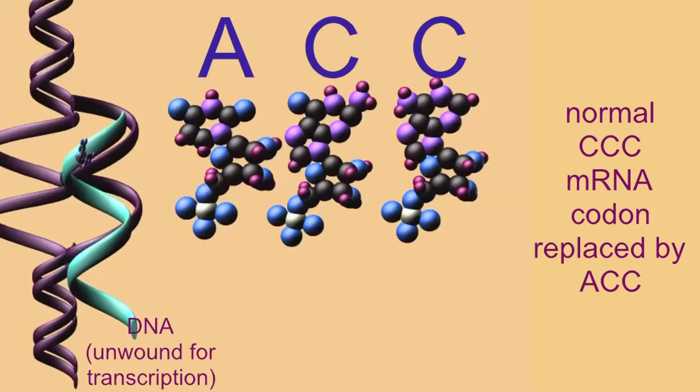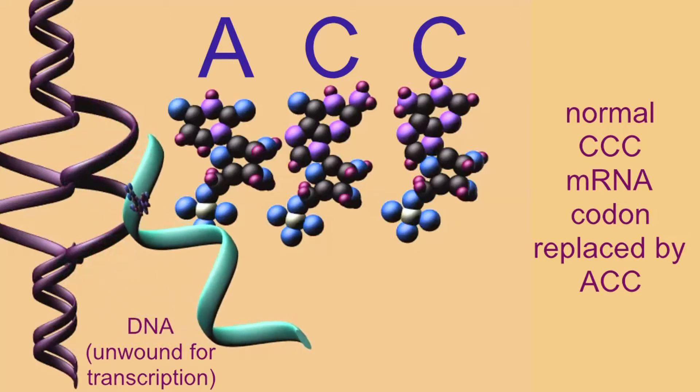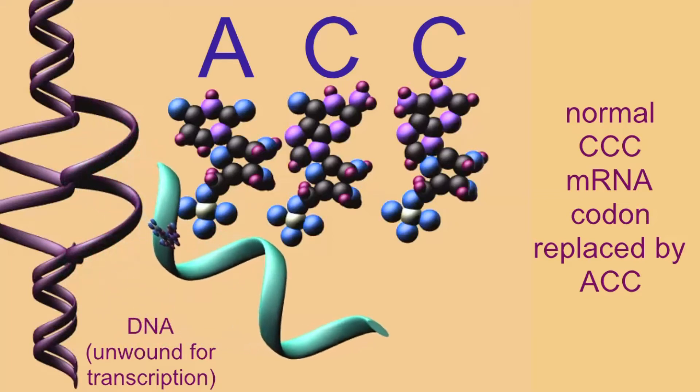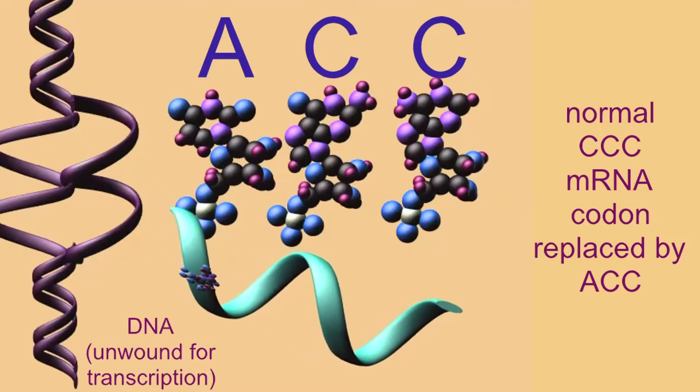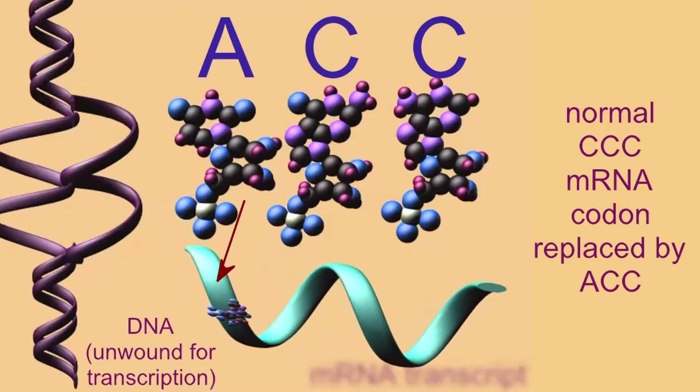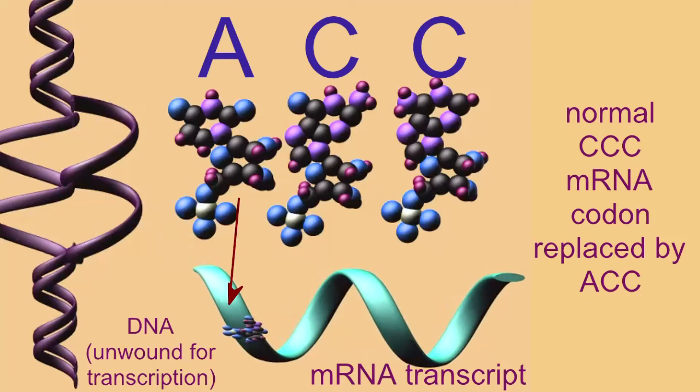This change in the DNA nucleotide sequence leads to a change in the mRNA nucleotide sequence. And in one specific codon, the normal CCC with three cytosines has been converted to ACC, adenine-cytosine-cytosine. That's my codon.